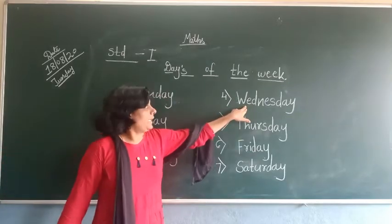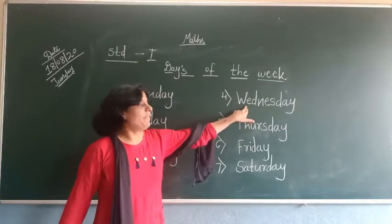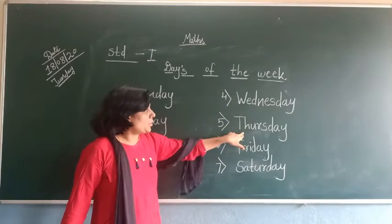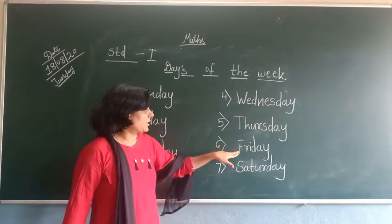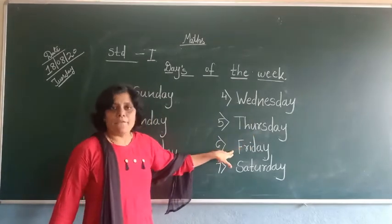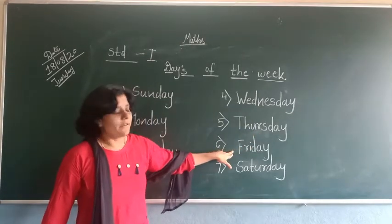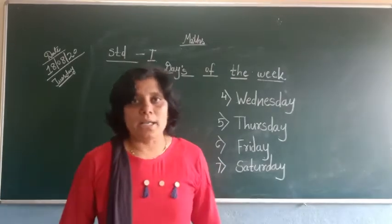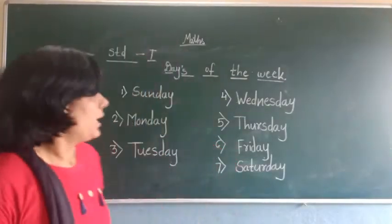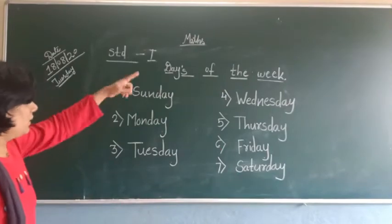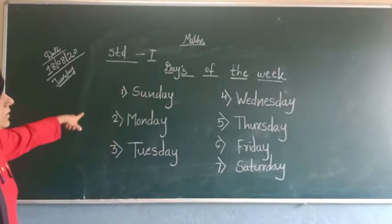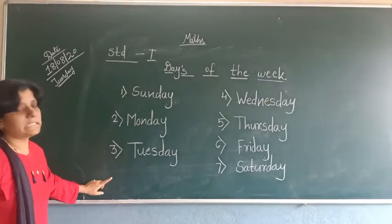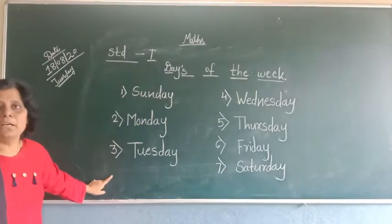W-E-D-N-E-S-D-A-Y Wednesday, T-H-U-R-S-D-A-Y Thursday, F-R-I-D-A-Y Friday, S-A-T-U-R-D-A-Y Saturday. These are the days of the week. There are 7 days in a week.